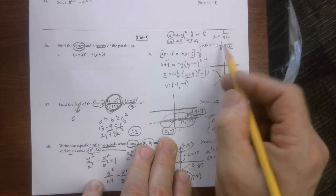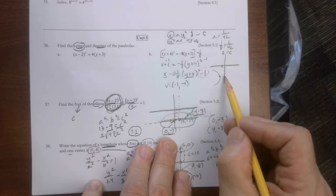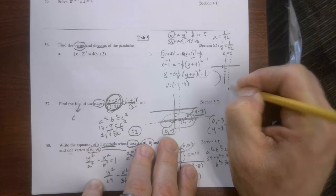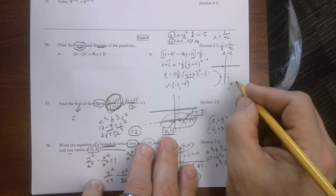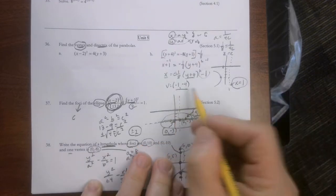So remember, a equals 1 over 4c. So I know what a is. It's 1/8. Notice I'm ignoring the negative because c is a distance. And we go 4 times what is 8? Well, c has to be 2, which means I need to move 2 units back this way. And that would be my directrix, which I taught is the soil. So that would be x equals 1. So there's my directrix and there's my vertex.